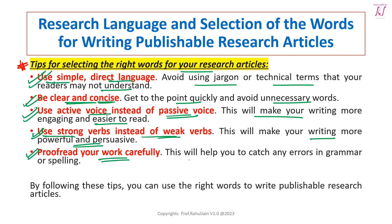Proofread your work carefully. Whatever you are writing, you need to proofread it carefully — this will help you catch any errors in grammar or spelling. Many people just write and don't check it once. When it goes for peer review, it may get rejected or the quality may be considered bad, lowering the ranking. So be calm, be patient, and give appropriate time for proofreading. By following these tips, you can definitely select the right words for your research articles.